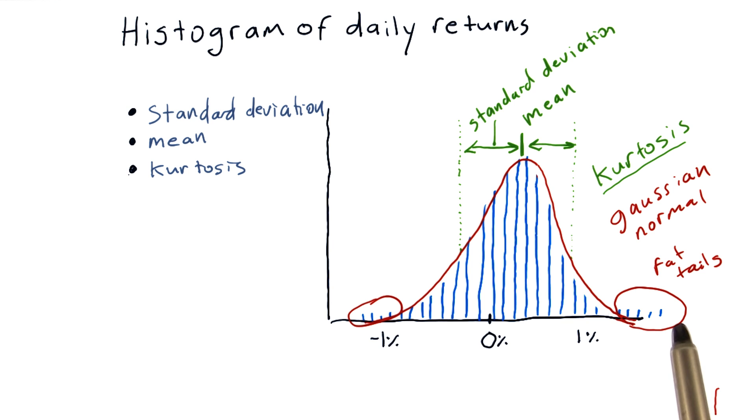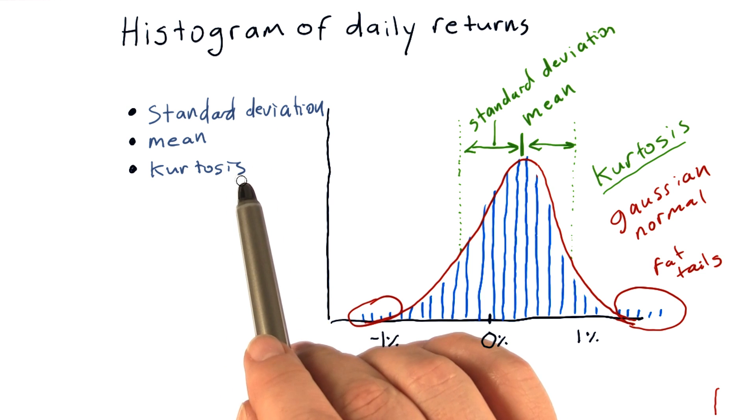So, we can plot our data in this sort of bar chart called a histogram. We can measure statistics on it, like standard deviation, mean, and kurtosis.